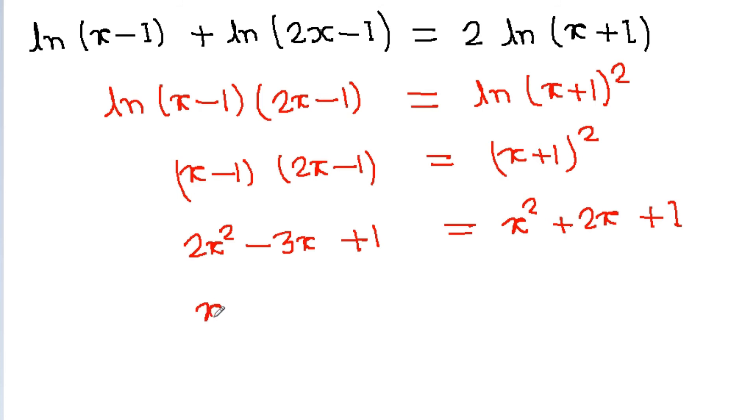From here we get x² - 5x is equal to 0, or we get x(x-5) is equal to 0.